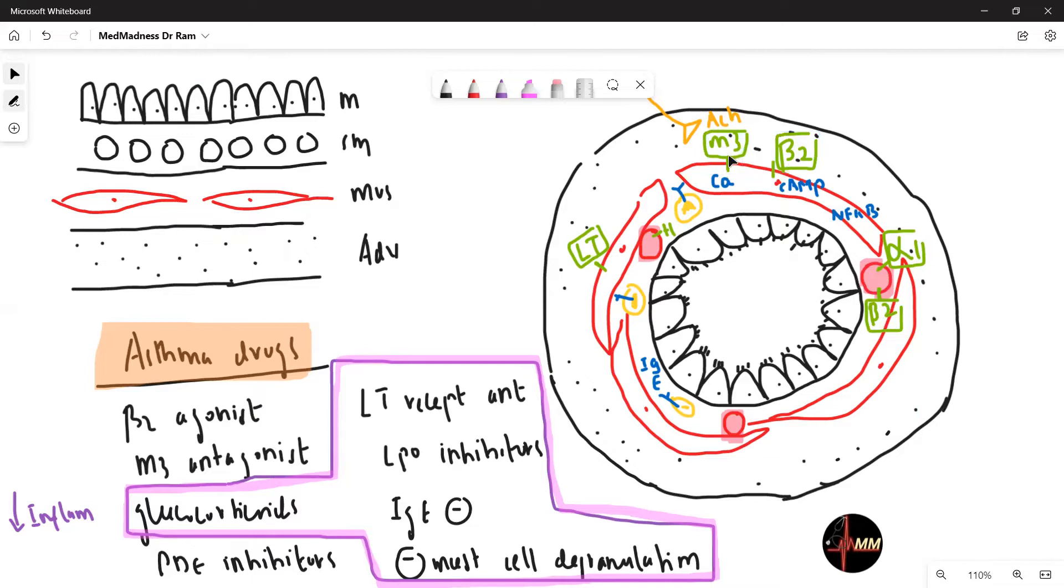Always remember this, M3 is innervated by the nerves which releases the acetylcholine. This acetylcholine acts on M3. What is the intracellular mechanism here? The M3 is going to increase the calcium inside the cells. The beta 2 is going to increase the cyclic AMP inside the cells. M3 resulting in bronchoconstriction and beta 2 result in bronchodilation.